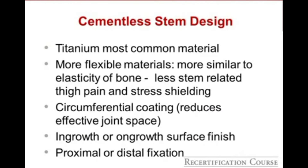Regarding cementless stem design, titanium is the most common material used. It is more flexible, similar to the elasticity of bone, which can result in less stress shielding and thigh pain compared to stiffer cobalt chrome implants. Circumferential coating reduces the effect of joint space and reduces the potential for osteolysis. Both in-growth and on-growth surface finishes have been successful, and proximal or distal fixation can work.